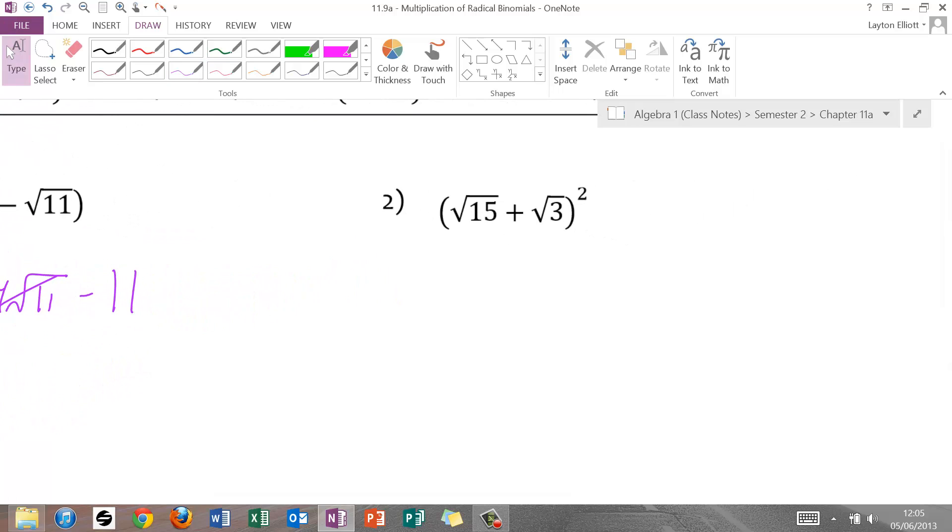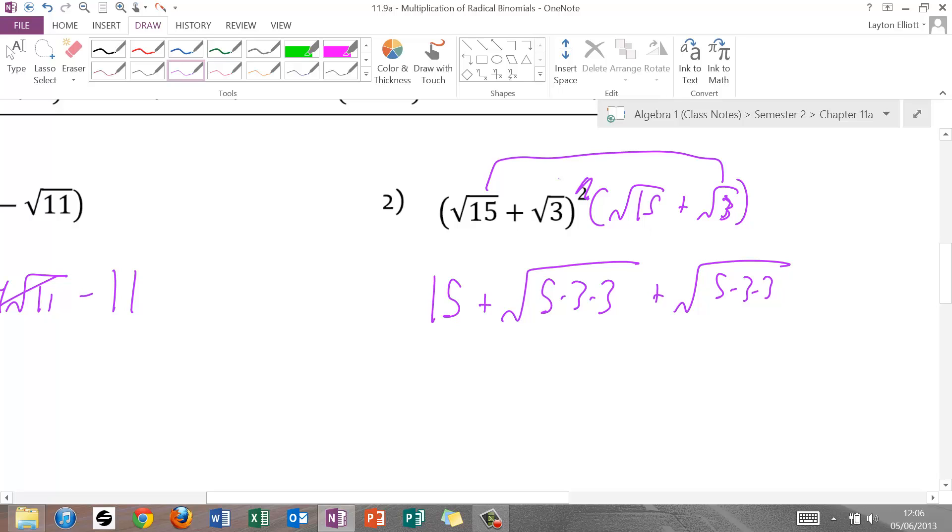Number 2, not going to be quite as straightforward. Remember, some of you may want to cross out the square and put radical 15 plus radical 3, so you remember to FOIL. First, radical 15 times radical 15 is positive 15. The outer, here's my trick. I'm actually going to keep that. I'm going to factor it further. 15 times 3 is 5 times 3 times 3, plus another 5 times 3 times 3 in a radical for the inner one. And then the last is going to be plus radical 3 times radical 3, which is 3.